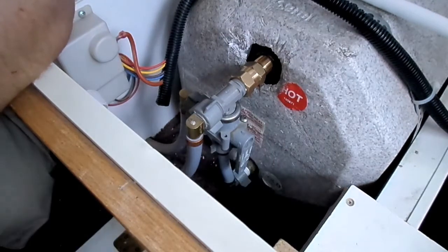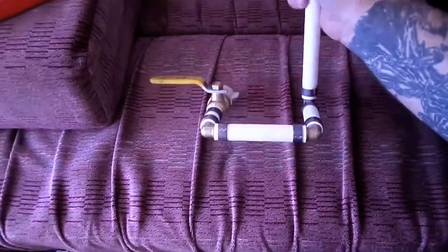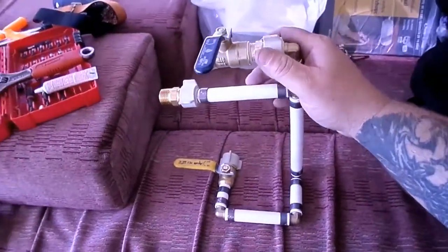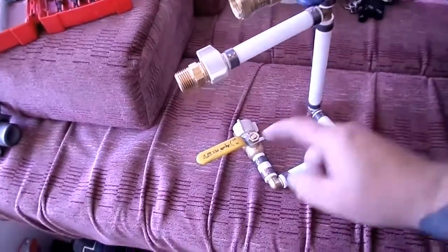Okay guys, this here is what I made. This is going to basically get rid of that bypass valve that was leaking. It's two separate valves - one valve here to turn off water to the water heater, and then this valve here to bypass.